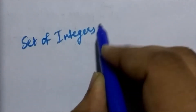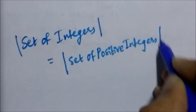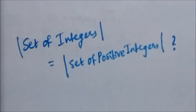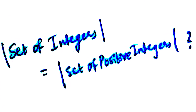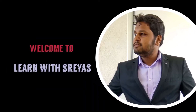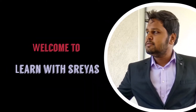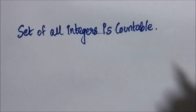We continue from where we stopped in our previous video. We asked whether the set of positive integers and the set of integers have the same cardinality. Turns out that the answer is yes — the set of all integers is a countable set.